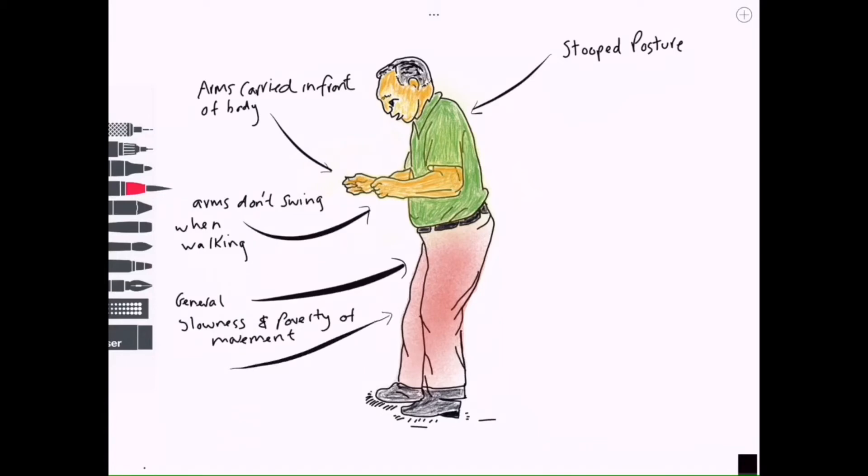Legs are stiff and the patient often walks with the knees bent using a very slow shuffling gait, and this is linked to the rigidity and the overall increase in muscle tone. So overall, the patient walks very slowly.